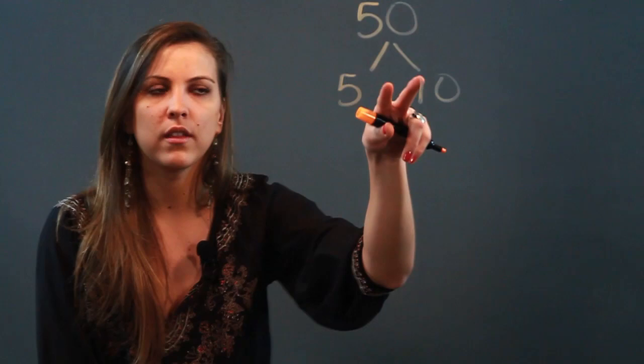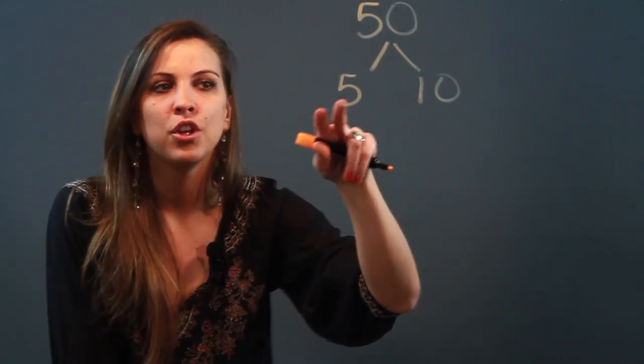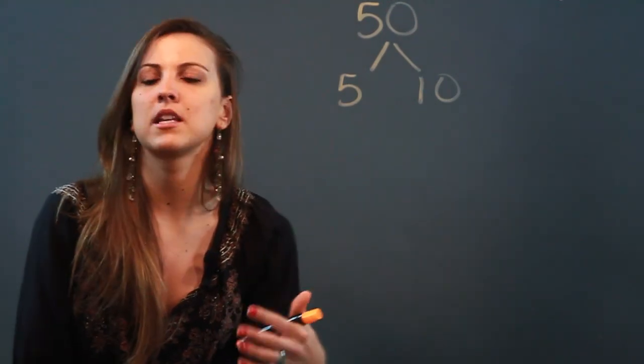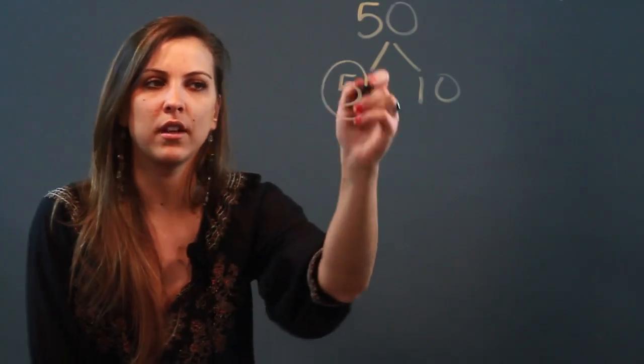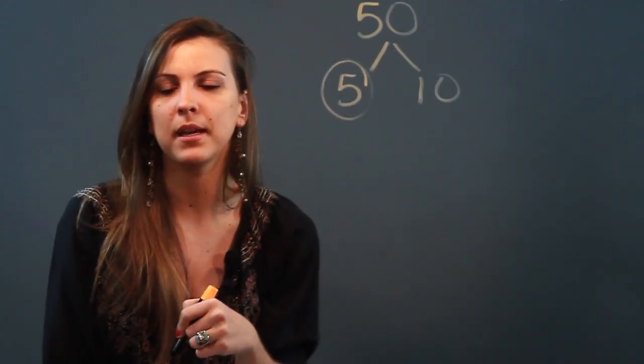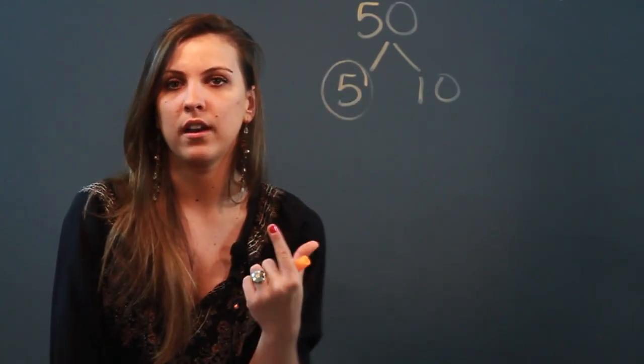Now, once you've broken the 50 up into two factors, you're looking for prime numbers. So if you see a number that is prime, like 5, you're going to circle it. And we know 5 is prime because it only has two factors, 1 and 5 itself.